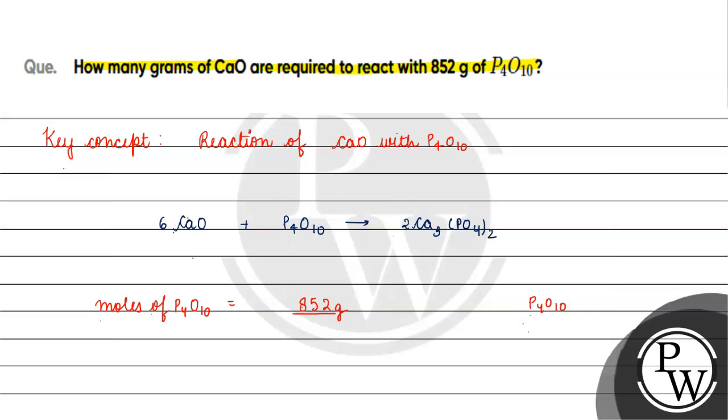We have P4O10. For phosphorus, the atomic mass is 31, so 4 times 31 is 124. Plus 10 times 16 is 160. 160 plus 124 equals 284 grams per mole. If we solve it, we have 3 moles.